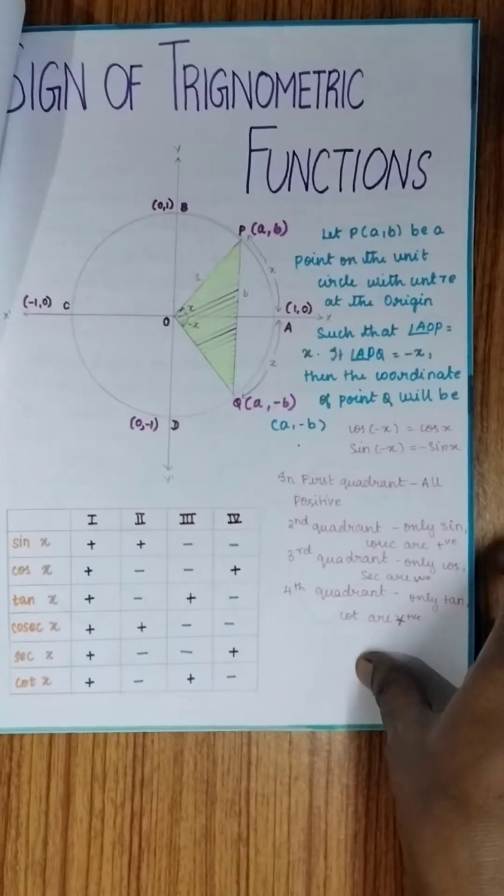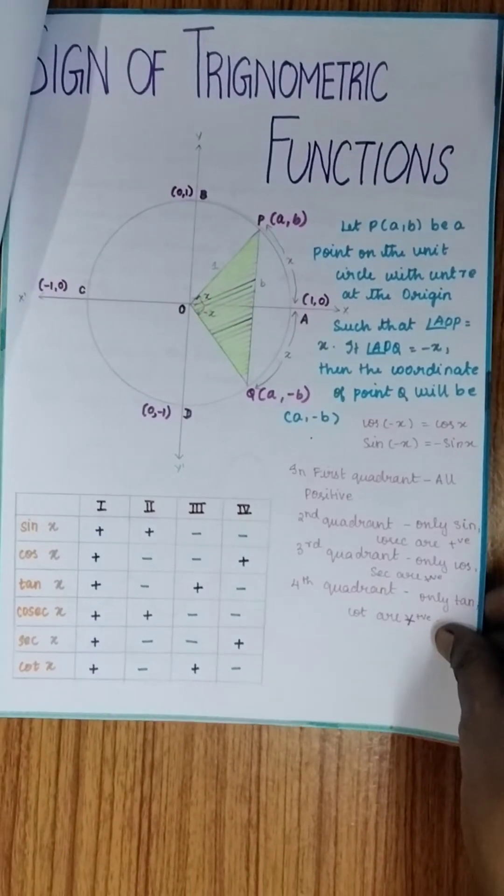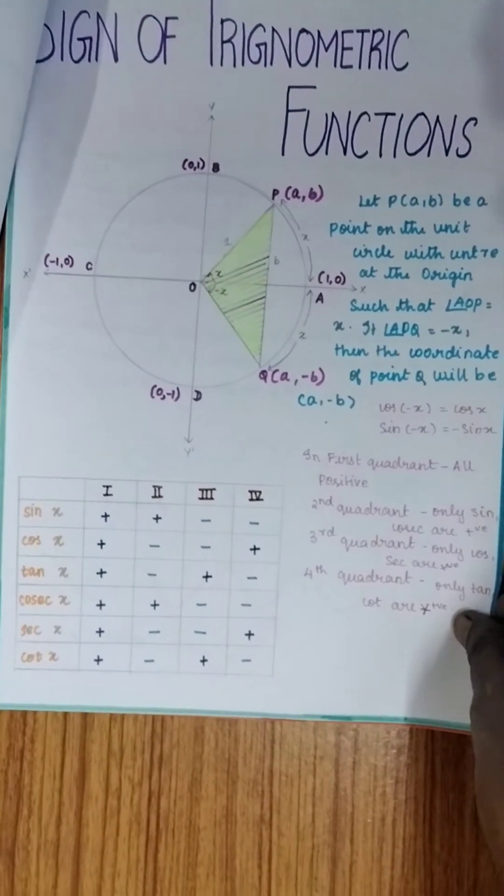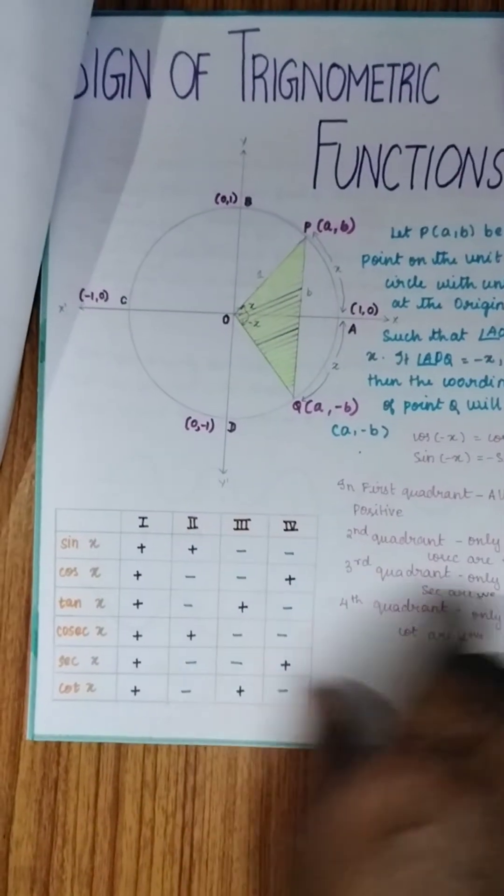On the next page she is given how do you find what is the sign of the trigonometric function with respect to all silver tea cups. With respect to that she has made the table.